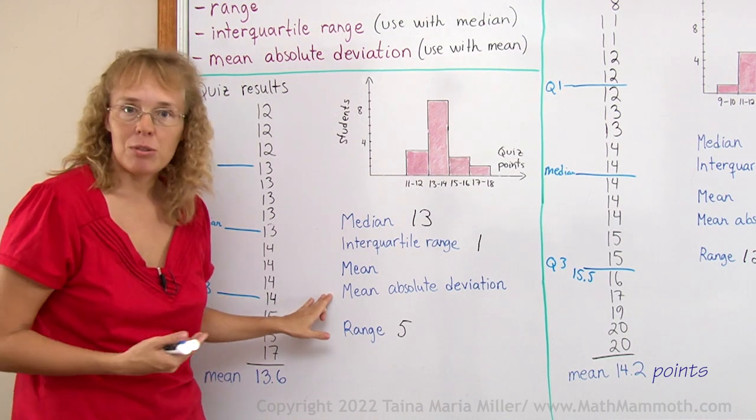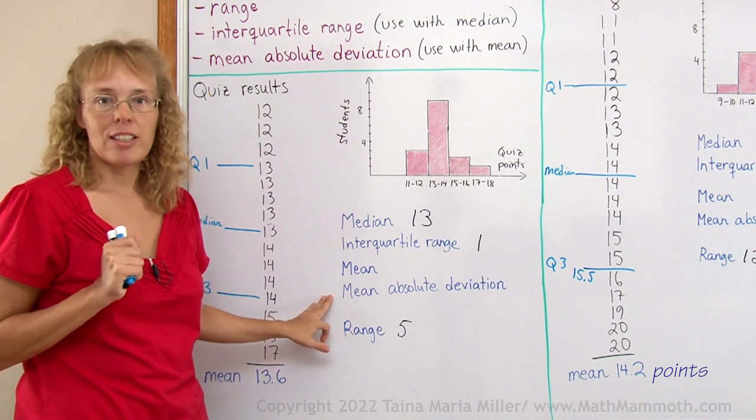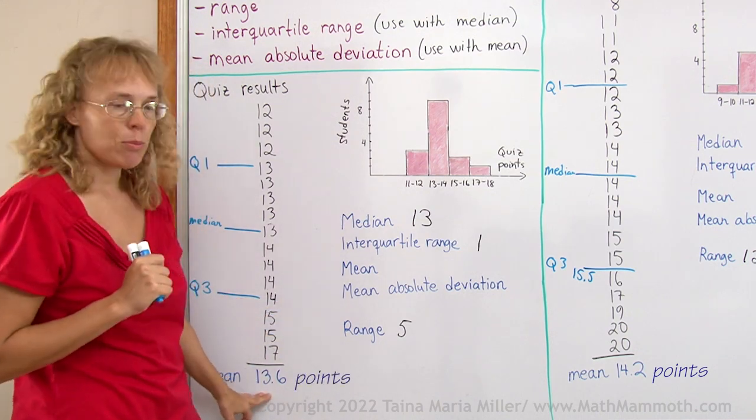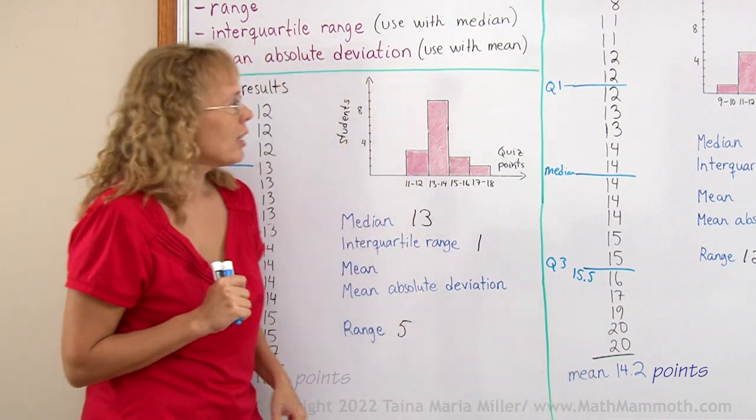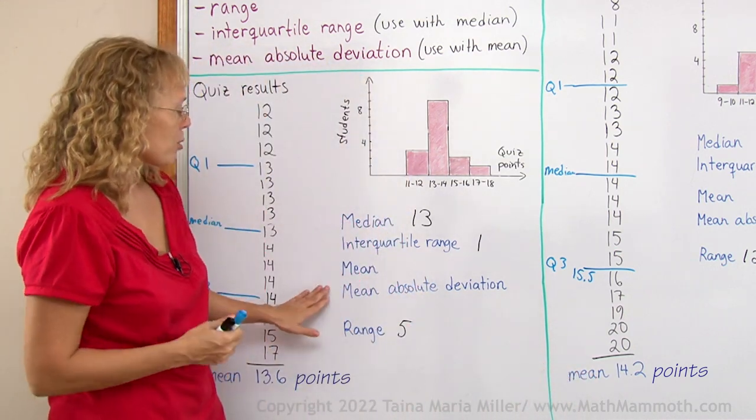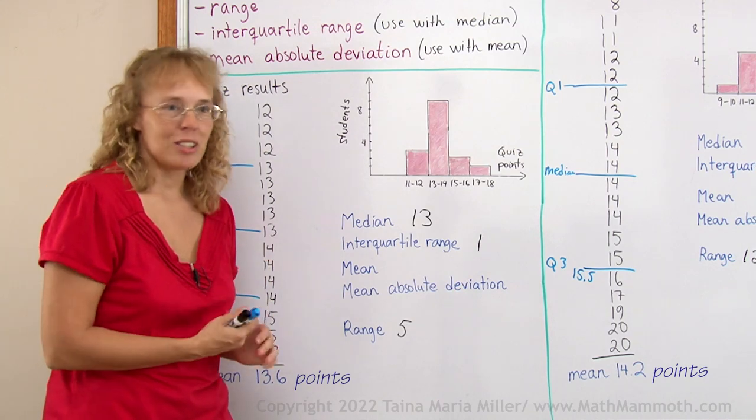Now, the mean and mean absolute deviation. I have already calculated the mean. Here is 13.6, here is 14.2. So now we go to mean absolute deviation, this difficult monster word.